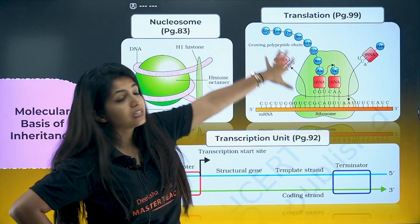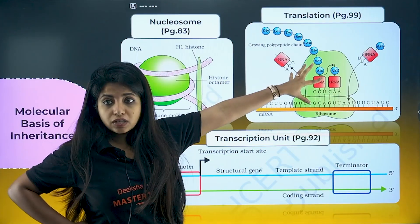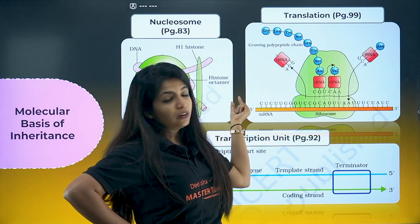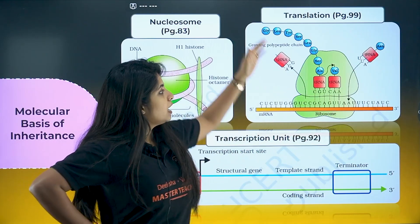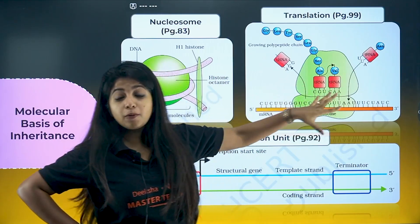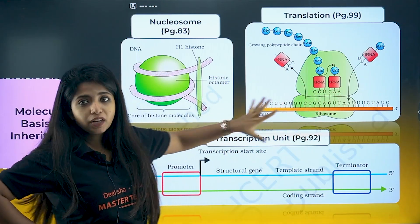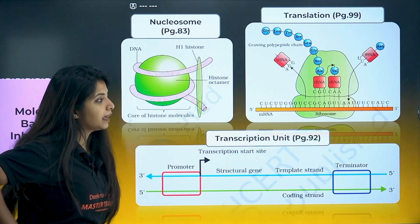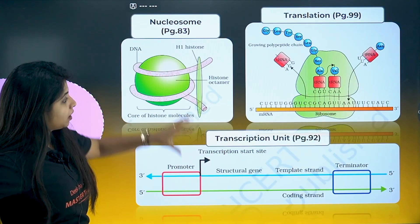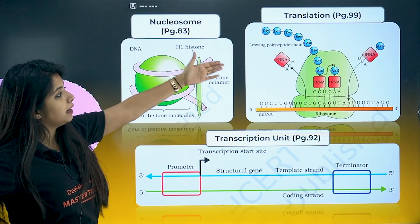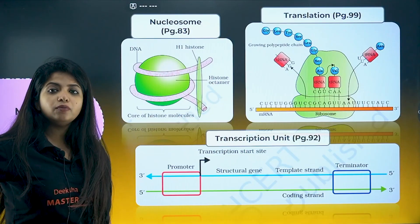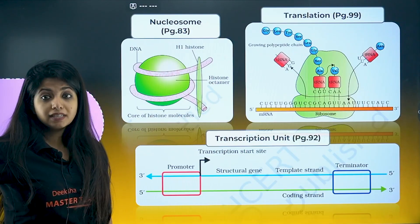The picture of translation — make it properly. Show the mRNA with direction 5' to 3', and also the tRNA and the polypeptide chains. Mention everything properly. This image of translation can come as a diagram question, and it can also come as an additional diagram when explaining translation.